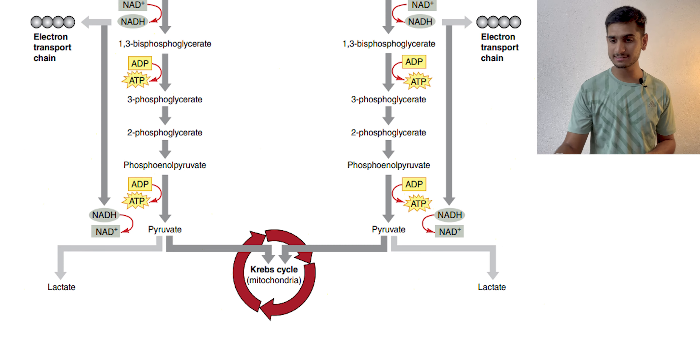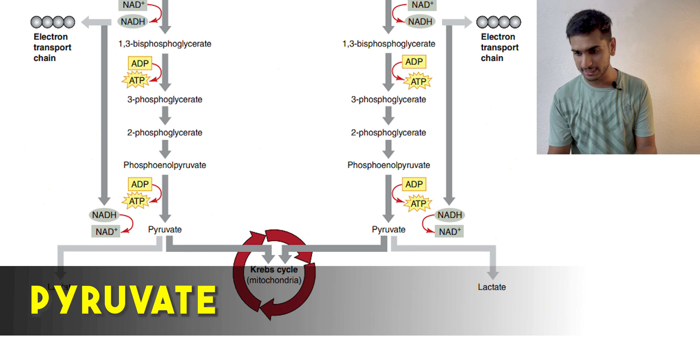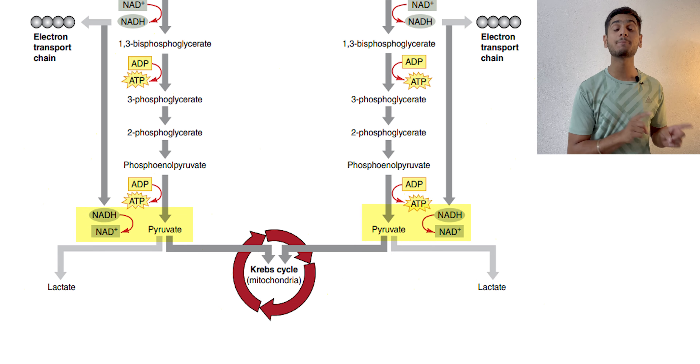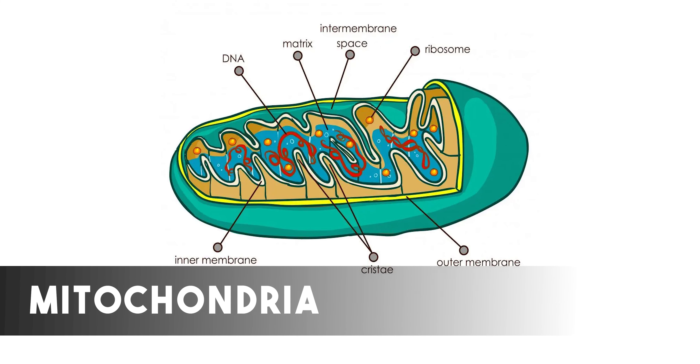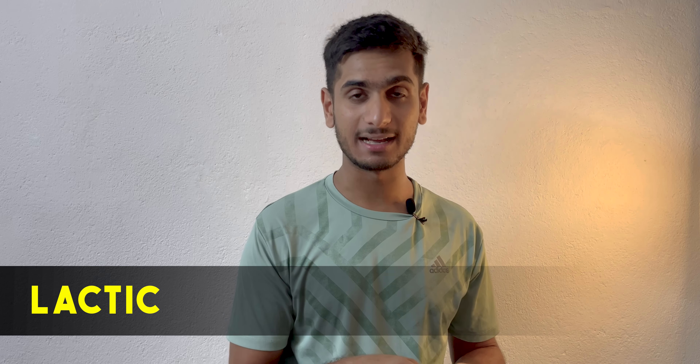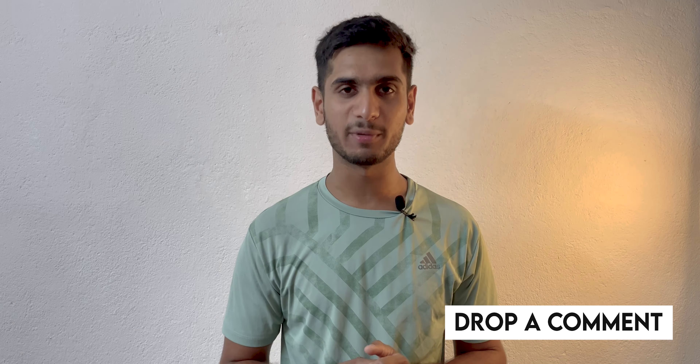Pyruvate is the end product of glycolysis. Depending upon the intensity and presence of oxygen, pyruvate can be shuttled into the mitochondria for undergoing the Krebs cycle, where the aerobic system comes into the picture. However, if the intensity is high and there is no oxygen present, pyruvate is converted into lactic acid. If you want a separate video on lactic acid, drop that request in the comment section.